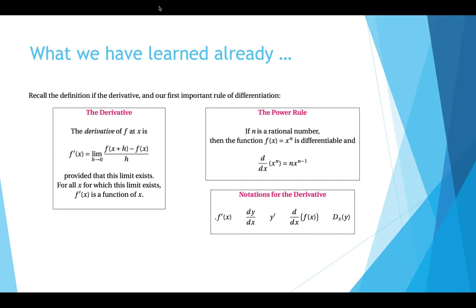Recall the definition of the derivative and our first important rule of differentiation. The definition of derivative of f at x is f prime of x equals the limit as h goes to 0 of f of x plus h minus f of x over h.